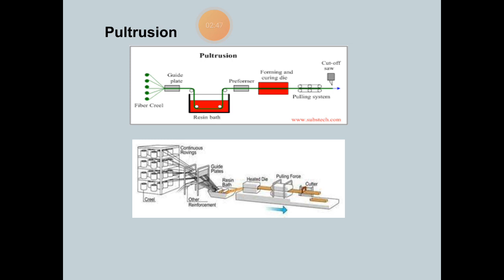It has the capacity to run continuously to produce components with a constant cross-section profile for large scale production, which is difficult using other composite fabrication techniques. This pultruded composite normally comprises a high 70% fiber content and the produced products are very stiff. In addition, with ease of fabrication and cost effectiveness, this makes the process one of the important techniques for fabrication of fiber composite products.